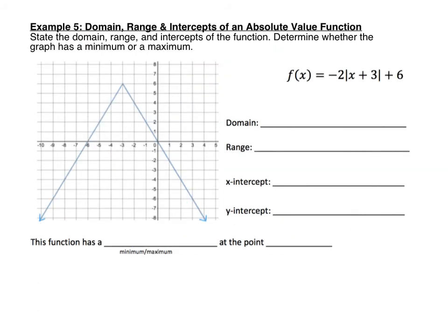Now we've looked at linear and quadratic functions — we're going to end today by looking at absolute value functions. An absolute value function will always be a V-shaped graph. Remember that these vertical line symbols mean absolute value. In lesson 1.4, we're going to look at how to graph these equations. For today, we'll give you the graph, and you're just going to state the domain, range, intercepts, and whether it has a maximum or minimum.